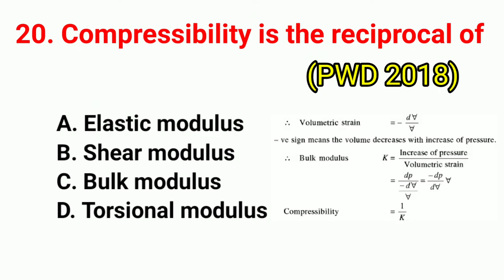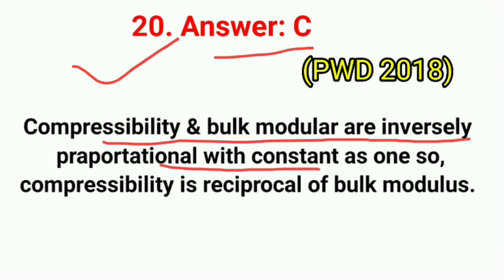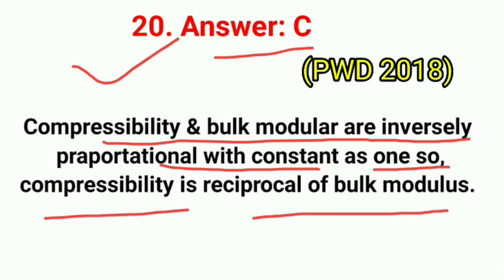Question No. 20. Compressibility is the reciprocal of? Correct answer is option C: bulk modulus. Compressibility and bulk modulus are inversely proportional with a constant of 1. So compressibility is the reciprocal of bulk modulus.